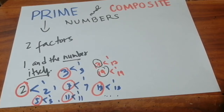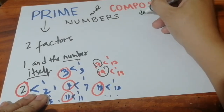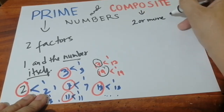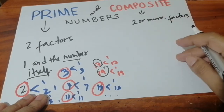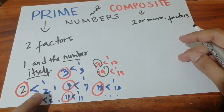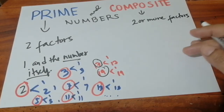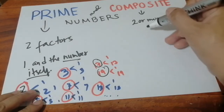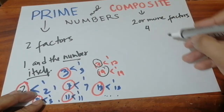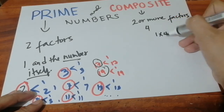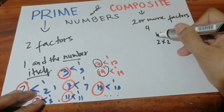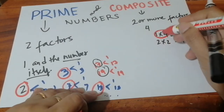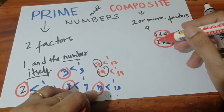Now, what about composite numbers? When we say composite numbers, they have two or more factors. The number has two or more factors — not just one and the number itself, but there are other numbers that when multiplied also give you the same answer. For example, four. Four is a composite number. The factors of four are one times four and two times two, so its factors are one, two, and four — three factors, more than two.